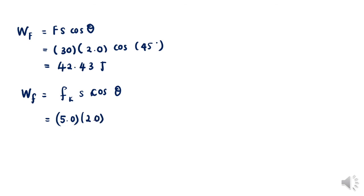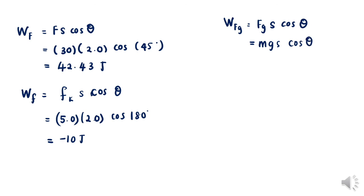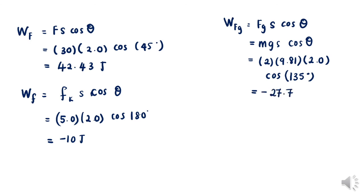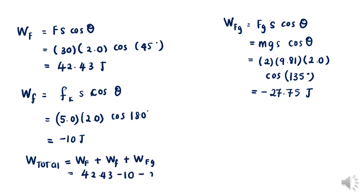For the work done by friction, the angle is 180°, so substituting all information we get negative 10 Joules. For the work done by weight, substituting all information we get negative 27.75 Joules. Therefore, the total work done acting on the object is 4.68 Joules.